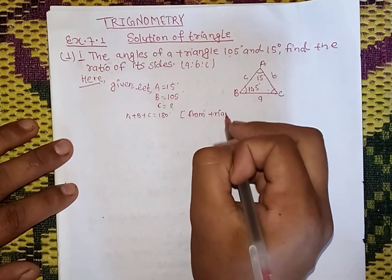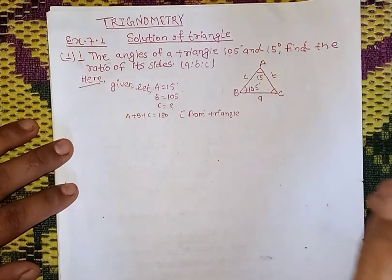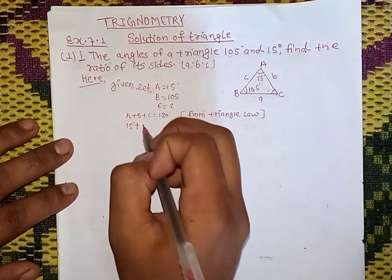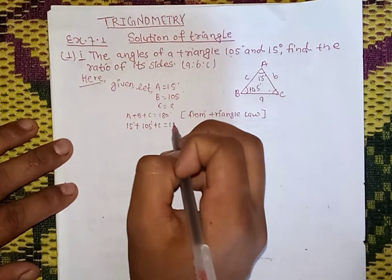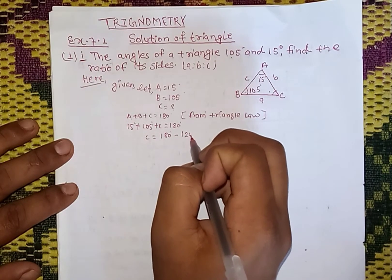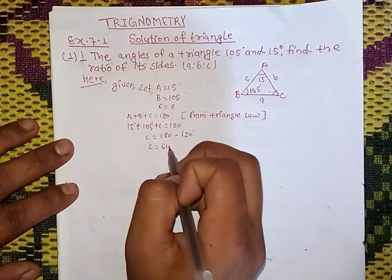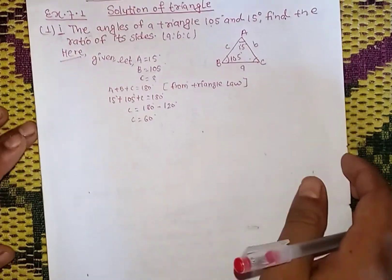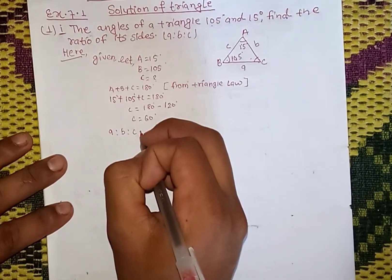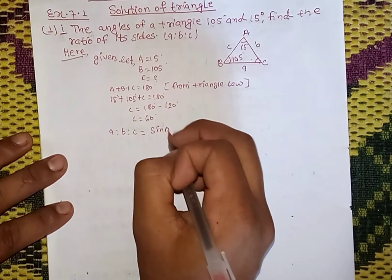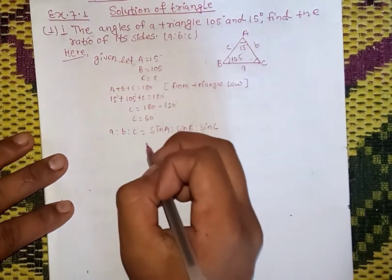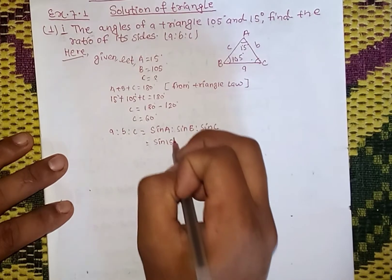I am using the triangle law: A plus B plus C equals 180 degrees. From the triangle law, the sum of all three angles is 180 degrees. So A equals 15 degree, B equals 105 degree, C equals 180 minus 120 equals 60 degrees.